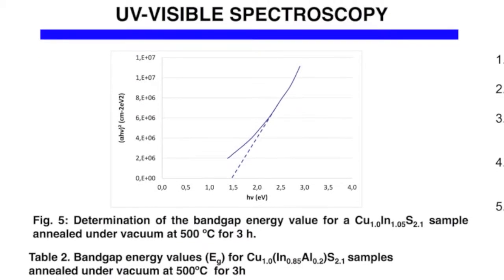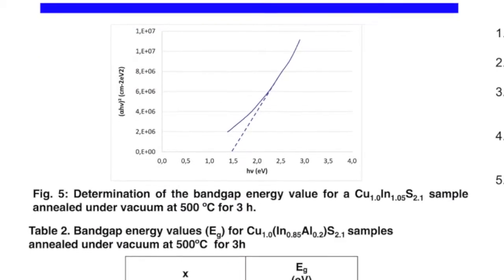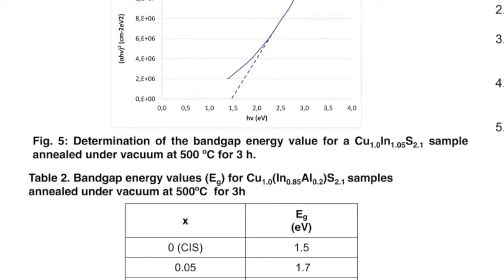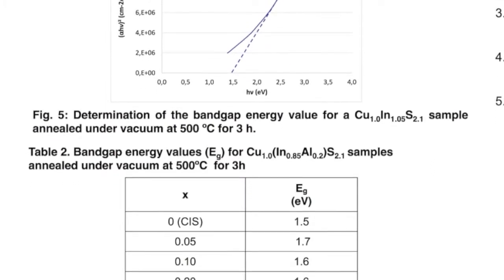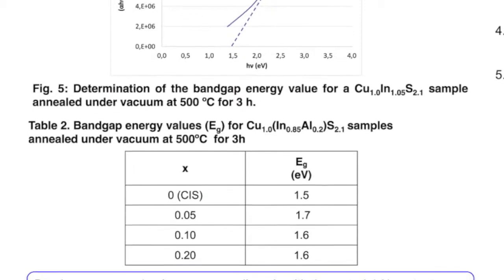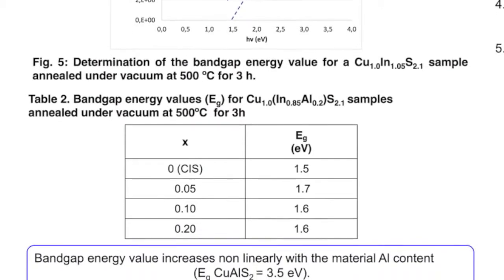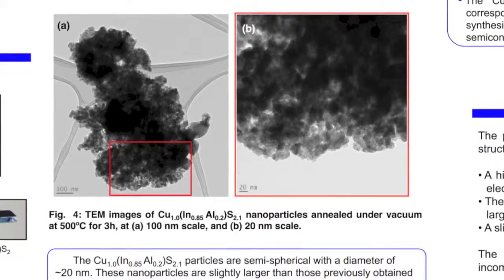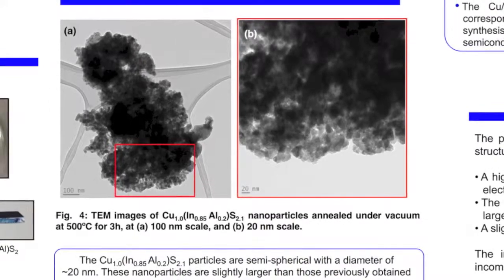Then for the UV visible spectroscopy we could see that the band gap energy value increases with aluminum content. It's not linear, it's yet to be optimized with the film preparation but it's good it's increasing with the aluminum and the crystallite size increases also with aluminum content.